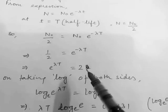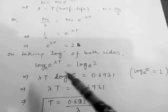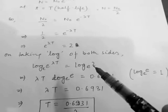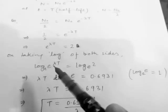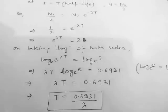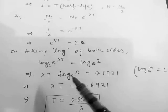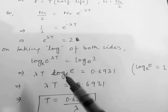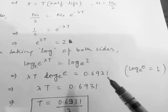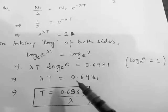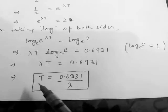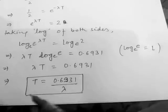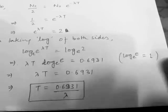Taking the log of both sides: λT · ln(e) equals ln(2). Since ln(e) equals 1, and ln(2) equals 0.6931, we get λT equals 0.6931. Therefore, the half-life T equals 0.6931 divided by λ. That is the relation between half-life and the decay constant.